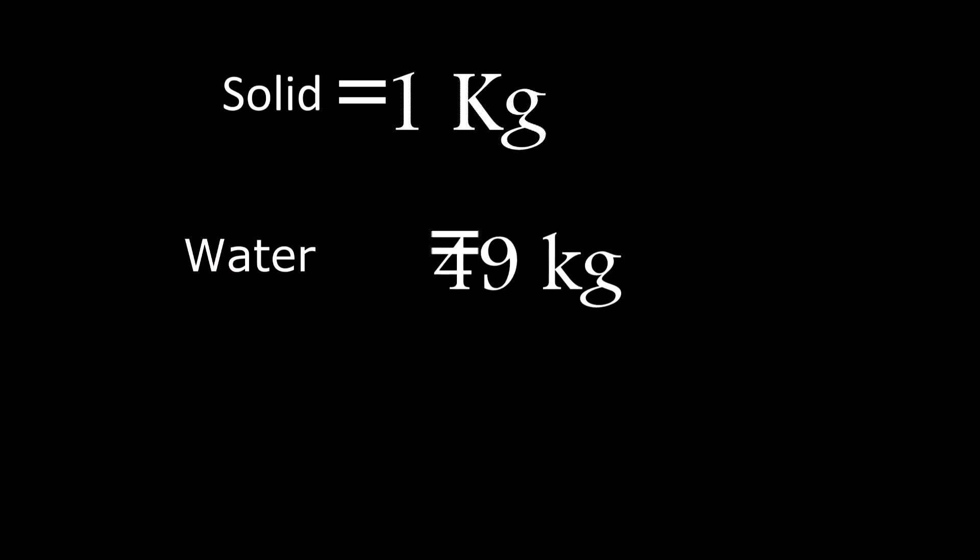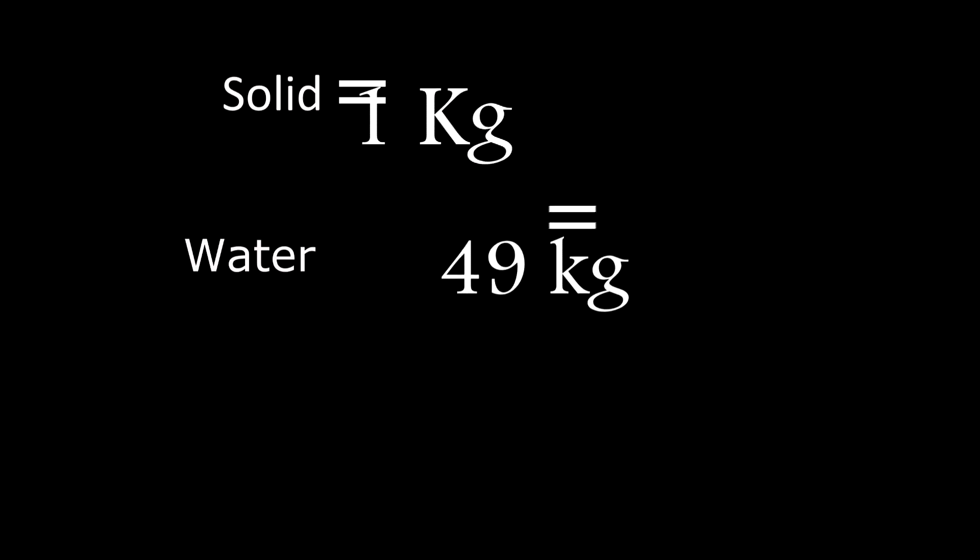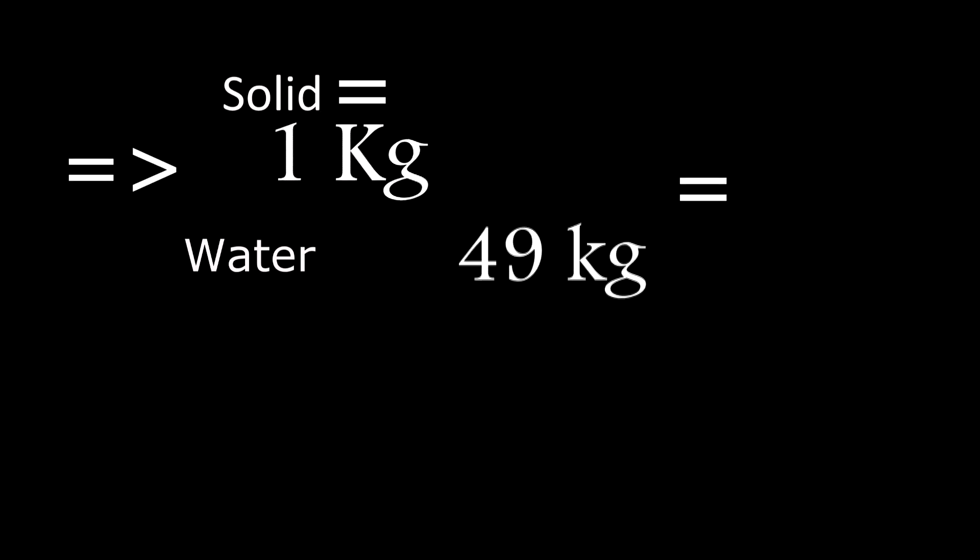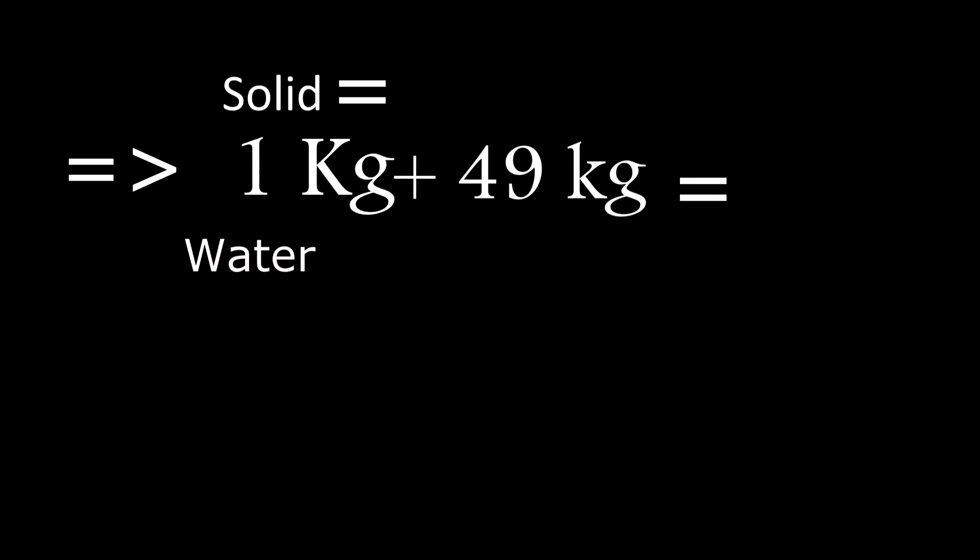Thus the ratio 1 to 49 represents that 49 is the weight of water and 1 is the weight of solid. The sum of the weights of water and solid in potatoes is 1 plus 49, which equals 50 kilos.